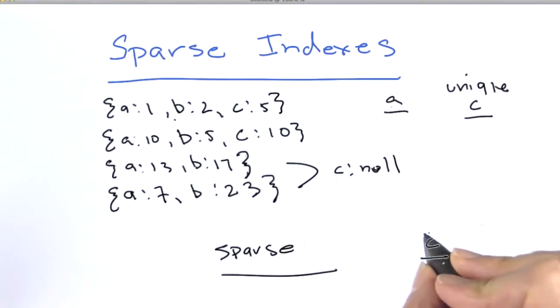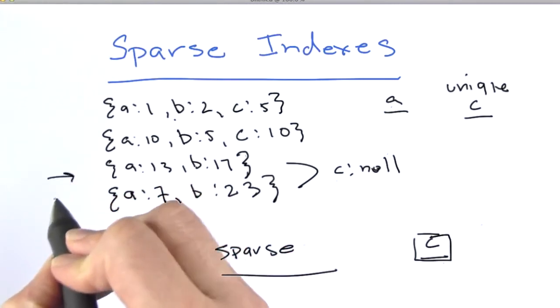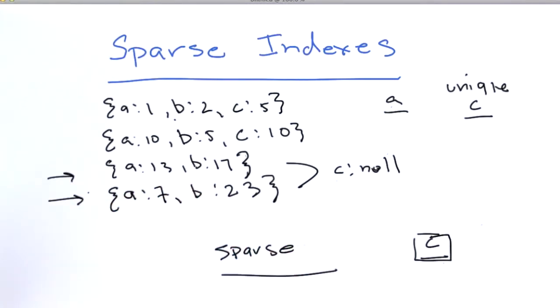So if we are indexing against C, then there will be no index entries for this, and there will be no index entries for this. Let's go through in the shell and look at this, and look at some of the ramifications of using a sparse index and what it means.